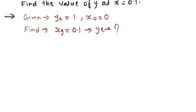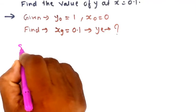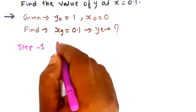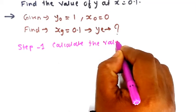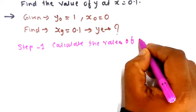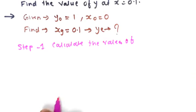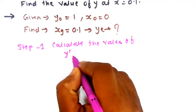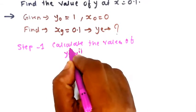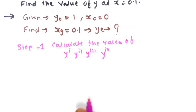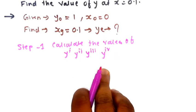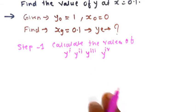Step 1 is to calculate the first four derivatives of y. You have to find out y1, y2, y3, and y4 — the first four derivatives. Let's see how to find them out.